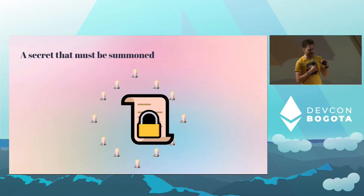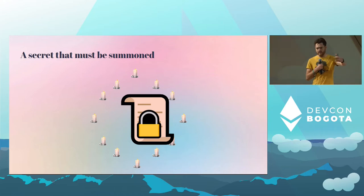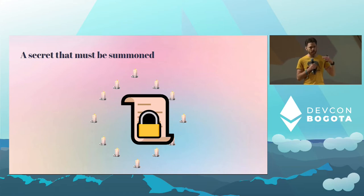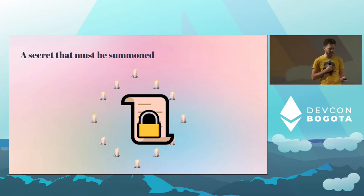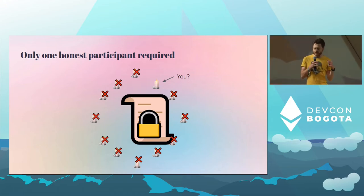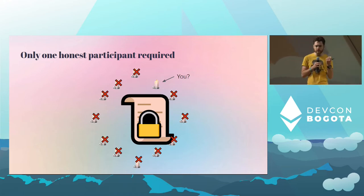The powers of danksharding are completely decimated if the secret is compromised. The idea is we're going to summon the secret from out of the ether. There's a ceremony that everyone here, the entire Ethereum community, and hopefully members from around the world will participate in, in order to produce the secret in a shared manner. Once we all have contributed and attested to it, as long as one of us is honest and throws away the secret the computer knew for but a moment, we will be good.